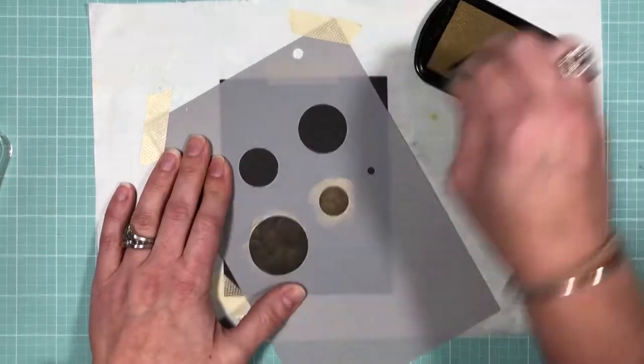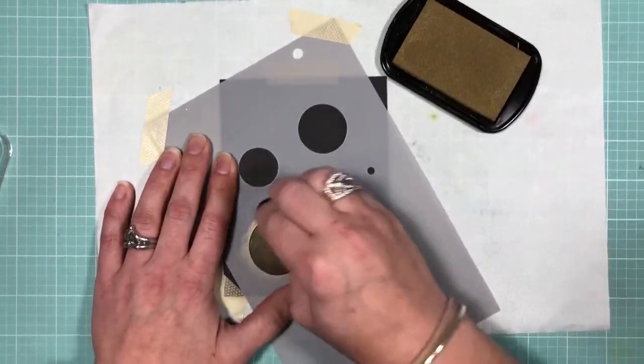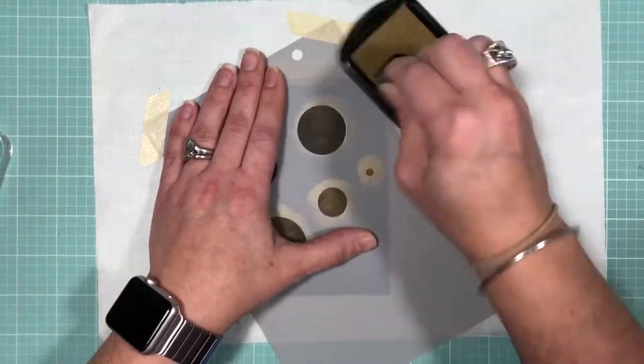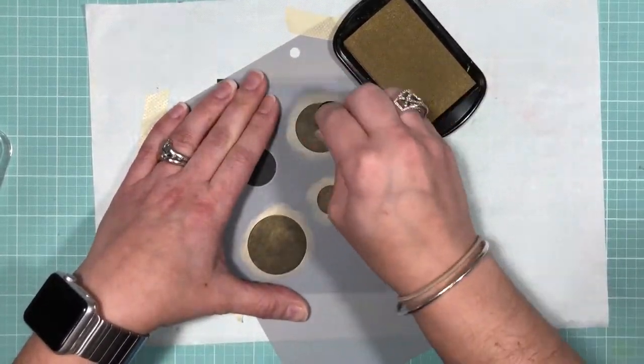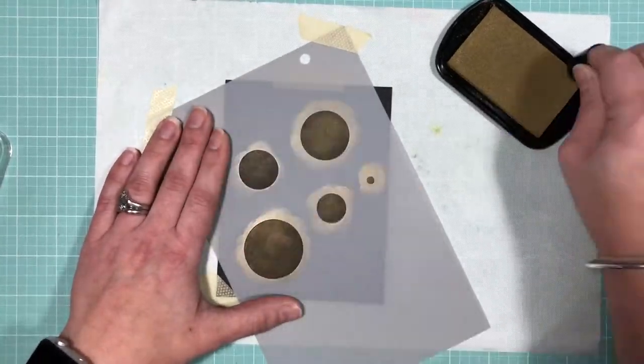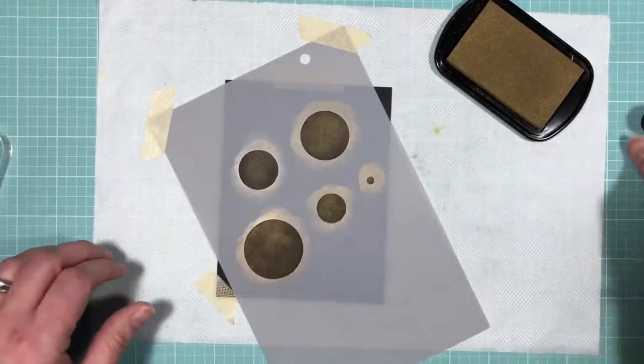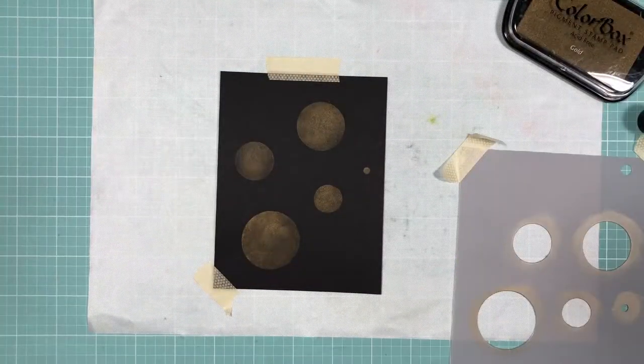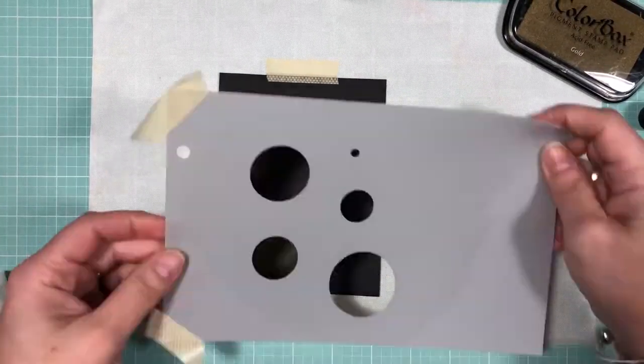To create my bokeh effect, I'm just going to use my metallic inks and a finger dauber and blend them out in each circle. Then I'm going to be rotating the stencil and placing it in various places on the background, alternating inks to give it that bokeh effect. I also take a baby wipe and wipe in between each ink.